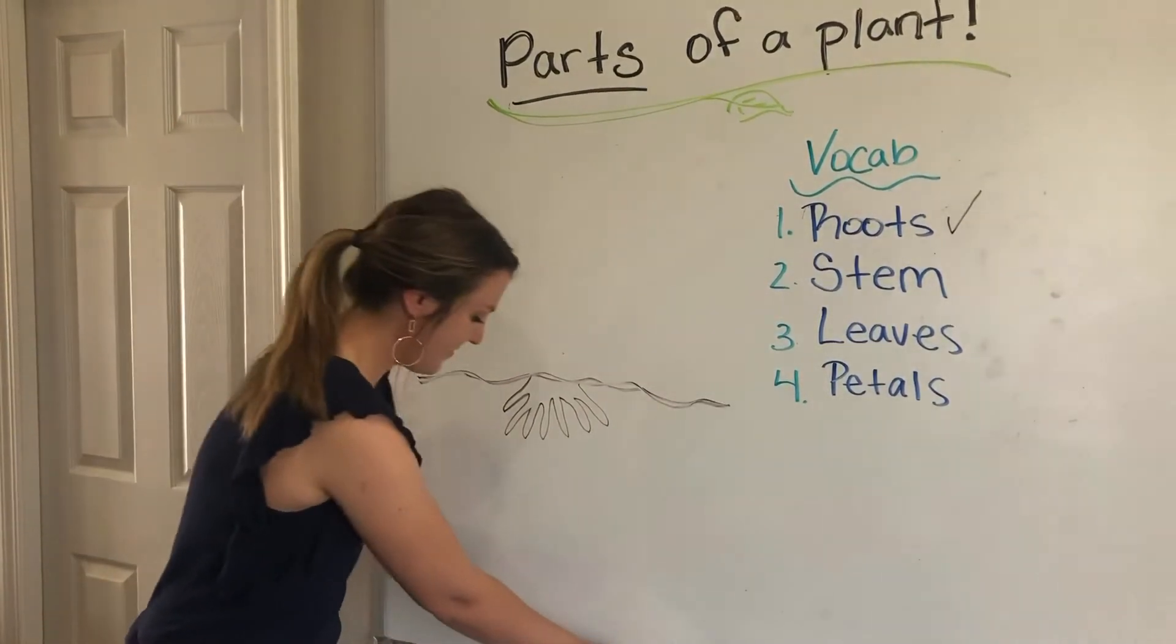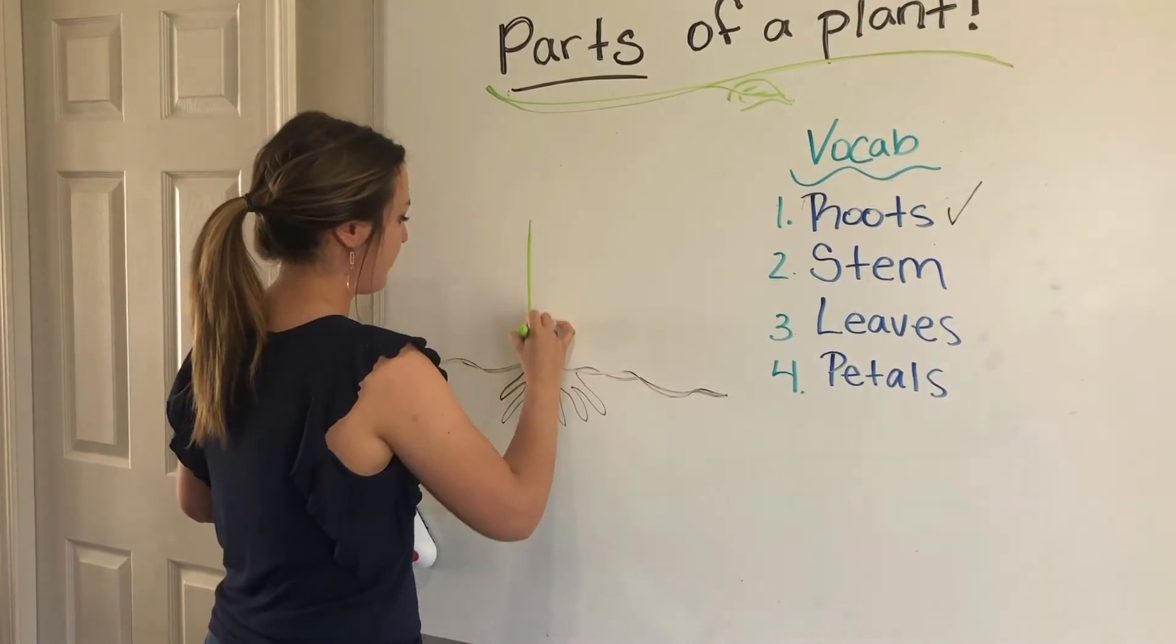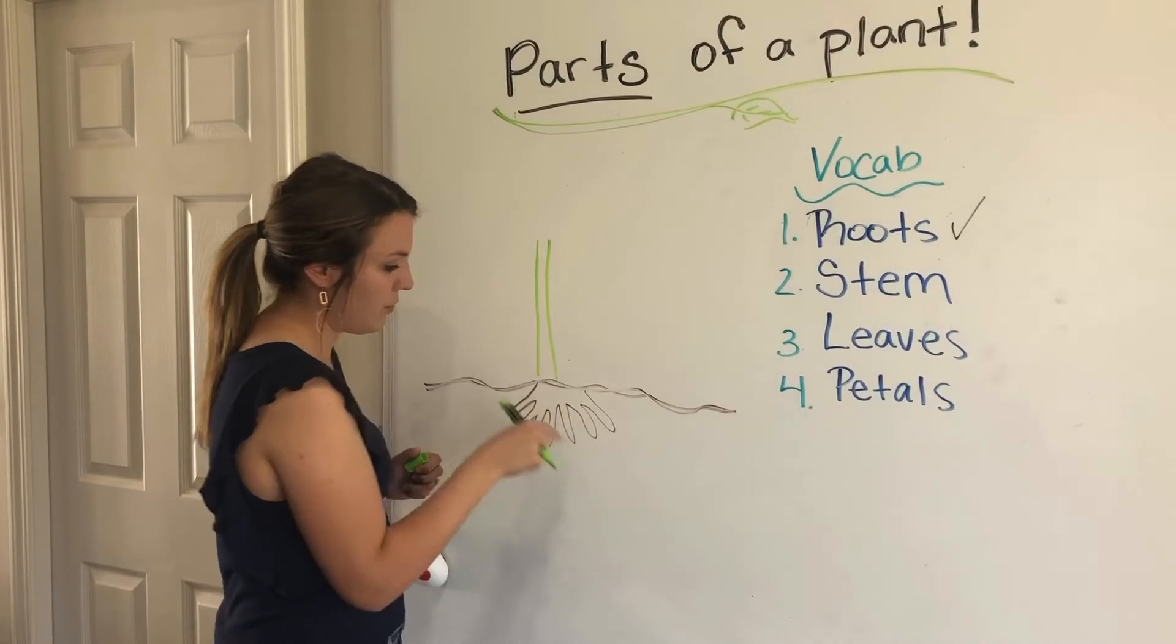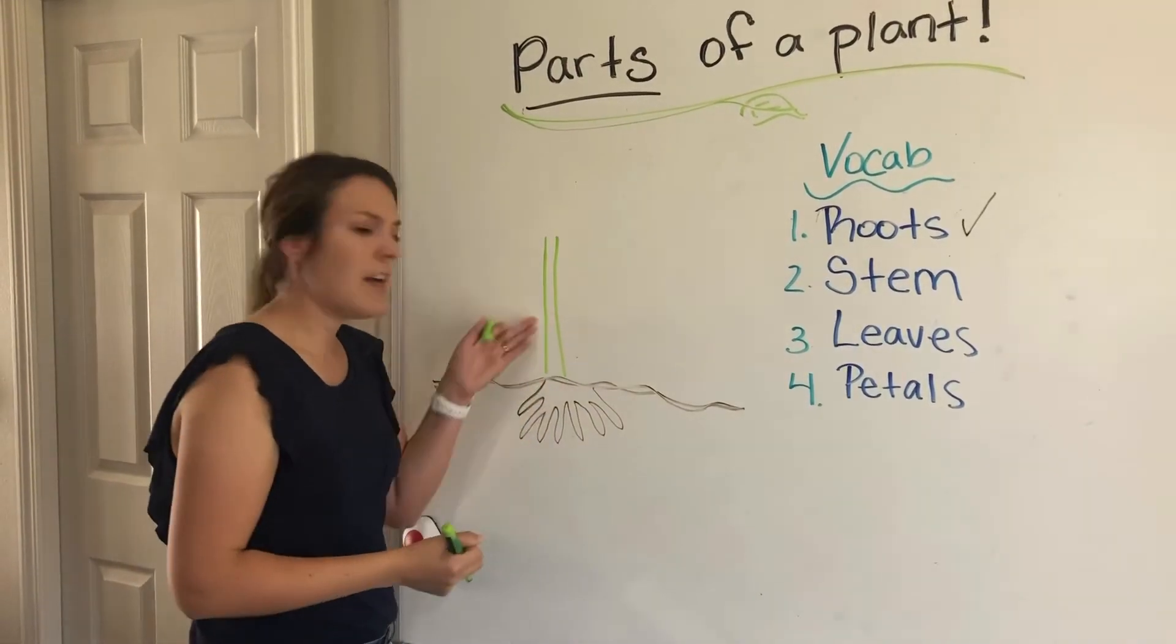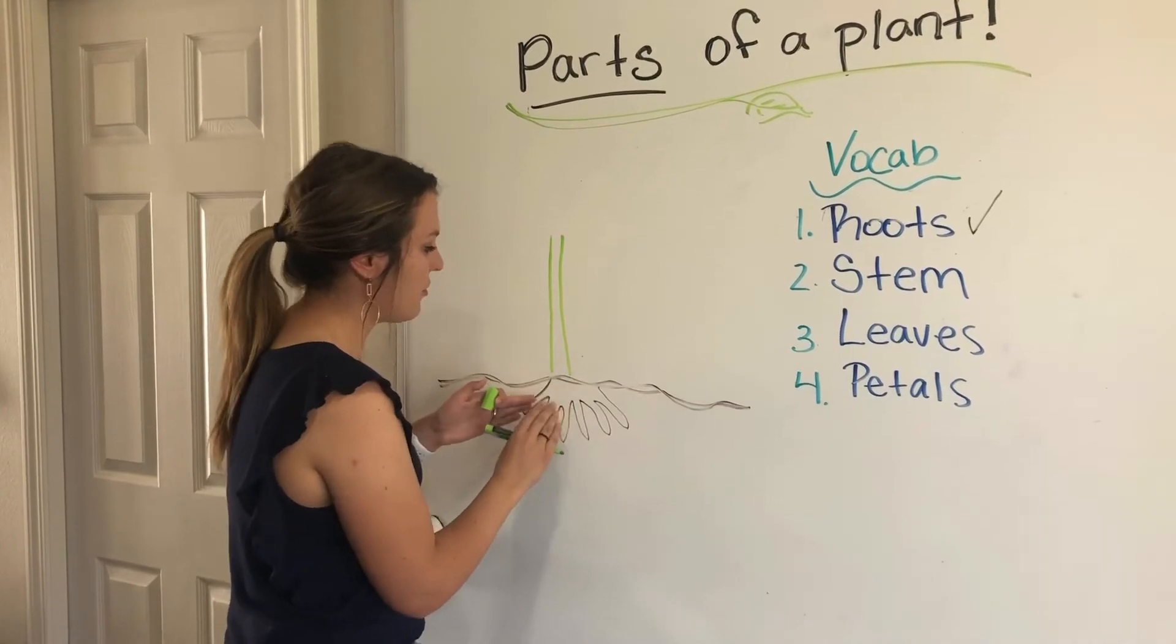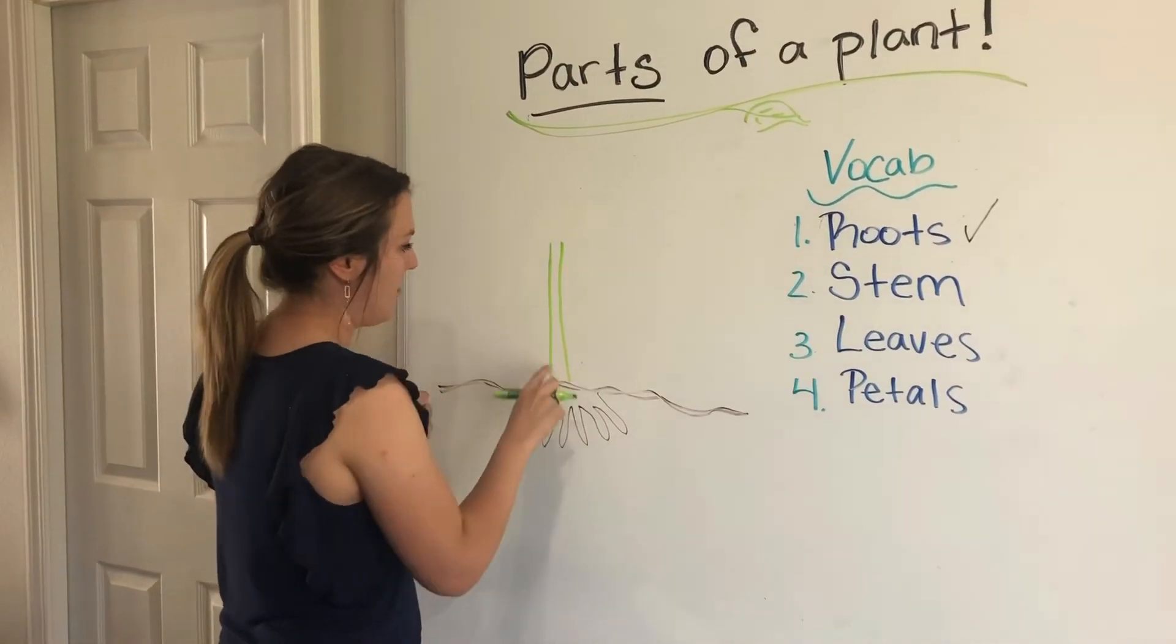Nice job, the stem is next. So we're gonna draw our stem. And just like I talked about with those roots, how roots suck up things into the plant, so does the stem. The stem is trying to help the things that come from the roots travel up the plant to keep it alive. So we have the stem, like a straw.